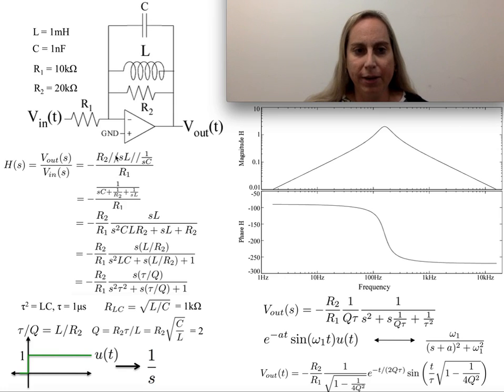And all three are in parallel, so it's a parallel combination of R2, SL, and 1 over SC. And you think, okay, that works. Well, that looks something along the lines of this function, which then I can expand out through multiplying by R2 and L into this particular term.